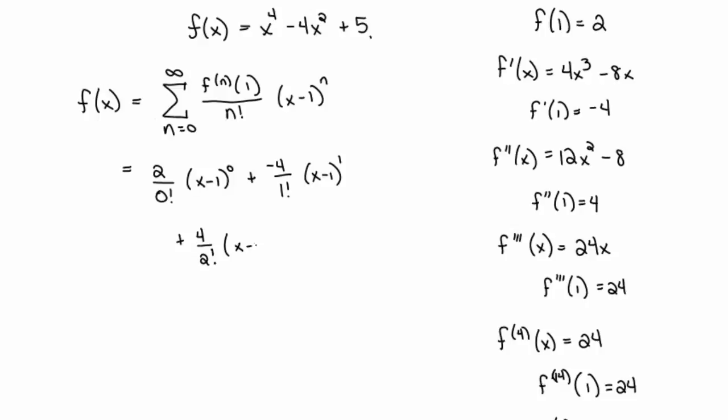Plus the third derivative, which is going to be 24, over three factorial x minus one cubed, plus the fourth derivative evaluated at one, 24, over four factorial x minus one to the fourth. And then we know that the fifth derivative and the sixth derivative and so on and so forth are all zeros.